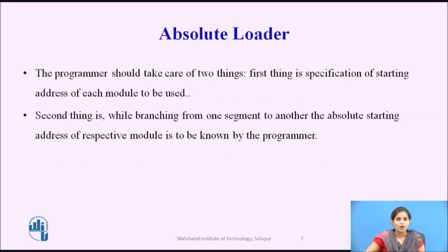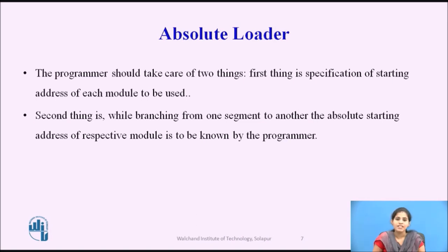The programmer should take care of two things. First, the specification of the starting address of each module to be used. If some modification is done in a module, the length of that module may vary, causing a change in the starting address of the immediately next module, requiring the programmer to make necessary changes. Second, while branching from one segment to another, the absolute starting address of the respective module must be known by the programmer so that it can be specified at the respective jump instruction.